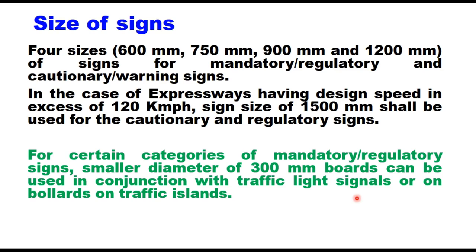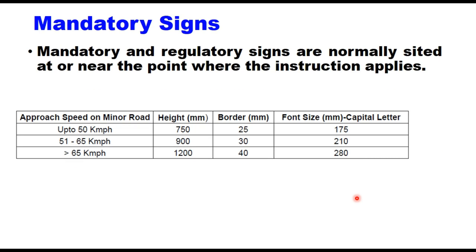Mandatory signs and regulatory signs are normally sited at or near the point where the instruction applies. For a speed up to 50 km/h, the height of the sign will be 750 mm, border will be 25 mm thick, and font size will be 175 mm, all in capital letters. If the approach speed is more than 65 km per hour on the minor road, then the dimensions of height, border and font size change accordingly.